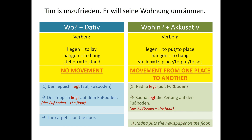We also have short forms in accusative: 'in das' becomes 'ins' and 'an das' becomes 'ans.' This chart clearly shows the difference between dative and accusative. For example, Tim is unsatisfied — 'Tim ist unzufrieden, er will seine Wohnung umräumen' — Tim wants to rearrange his room, illustrating movement versus static position.